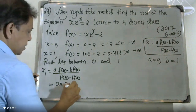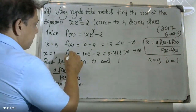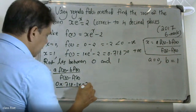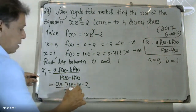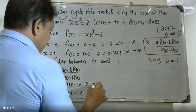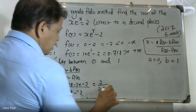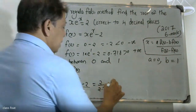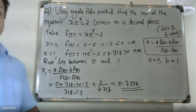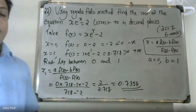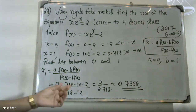Substituting values: X1 = (0·0.718 - 1·(-2)) / (0.718 - (-2)) = 2 / 2.718. The result is X1 = 0.7358.